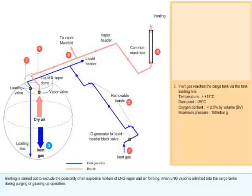Temperature: greater than +18 degrees centigrade. Dewpoint: -25 degrees centigrade. Oxygen content: less than 2.0% by volume (BV). Maximum pressure: 150 millibar gauge.